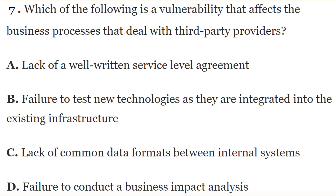Question 7: Which of the following is a vulnerability that affects business processes dealing with third-party providers? The answer is A — lack of a well-written Service Level Agreement (SLA). A lack of a well-written, comprehensive SLA is a vulnerability in third-party provider relationships.